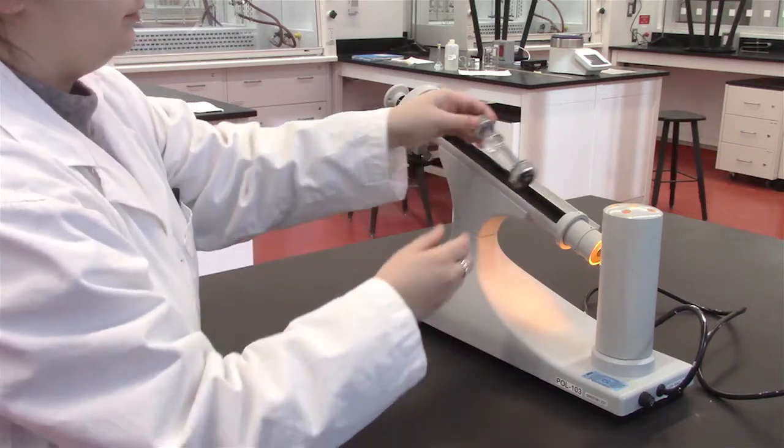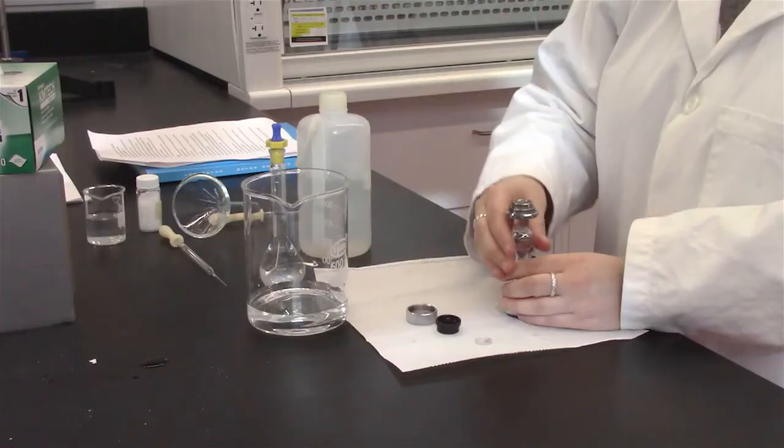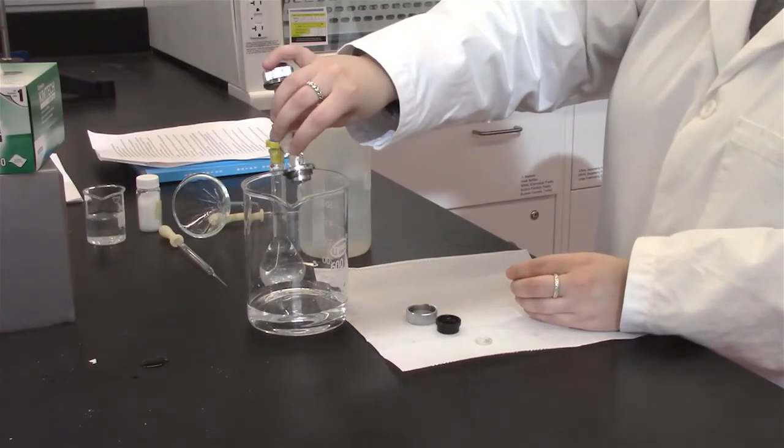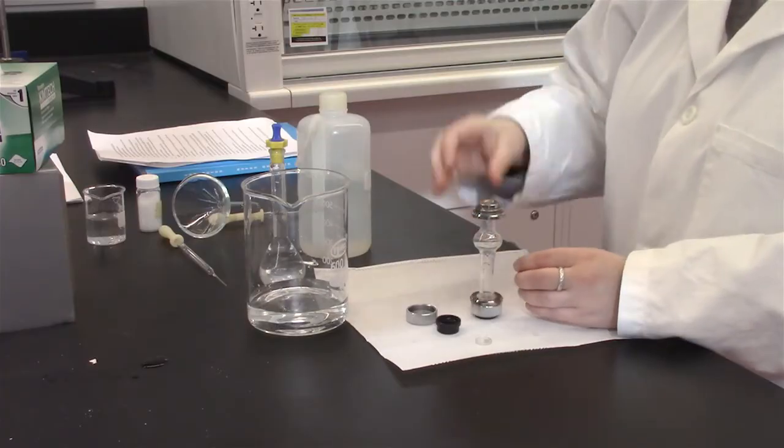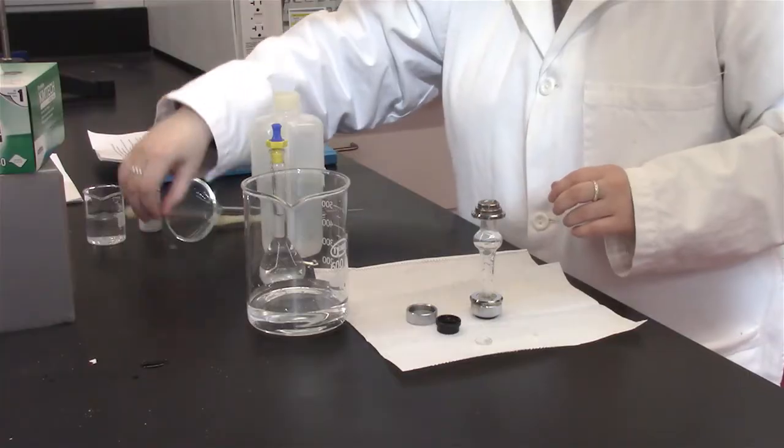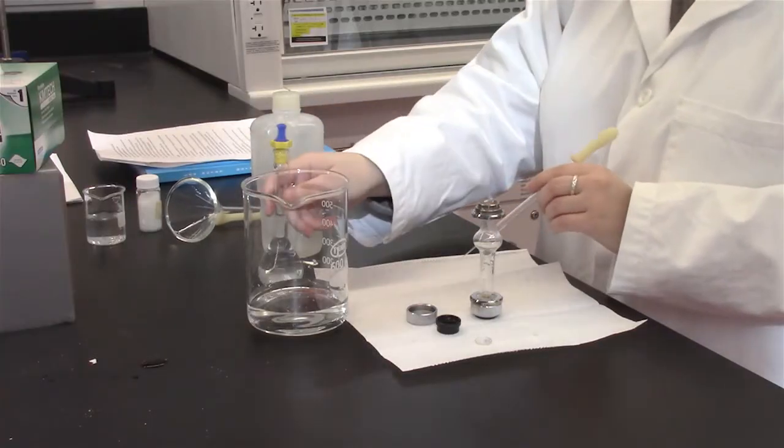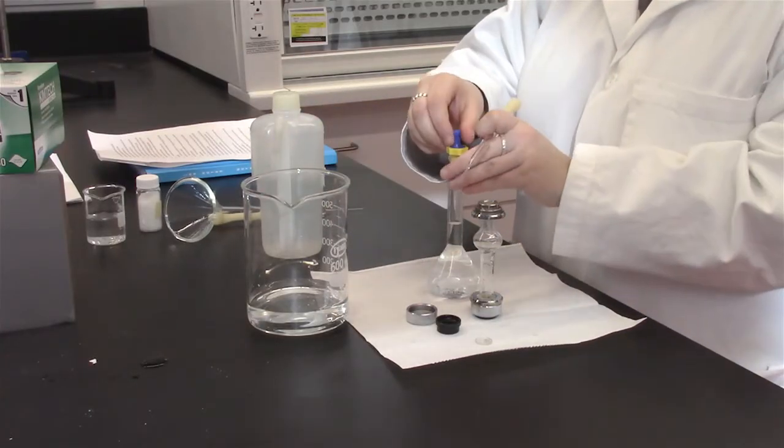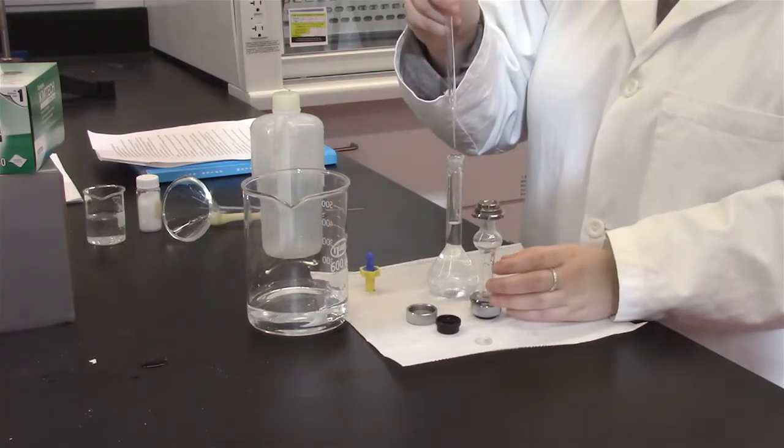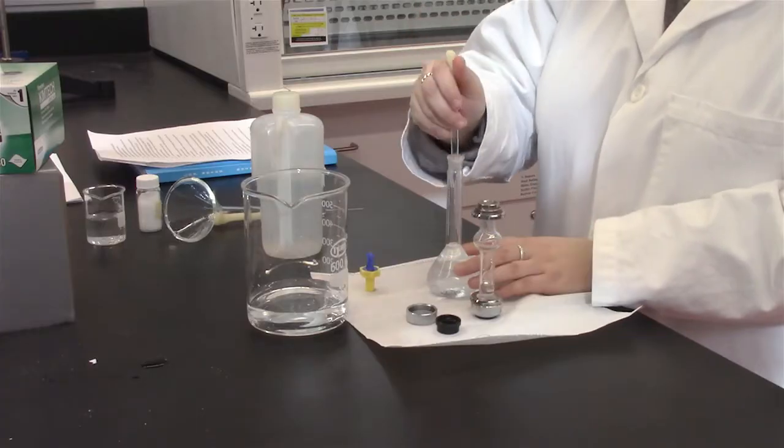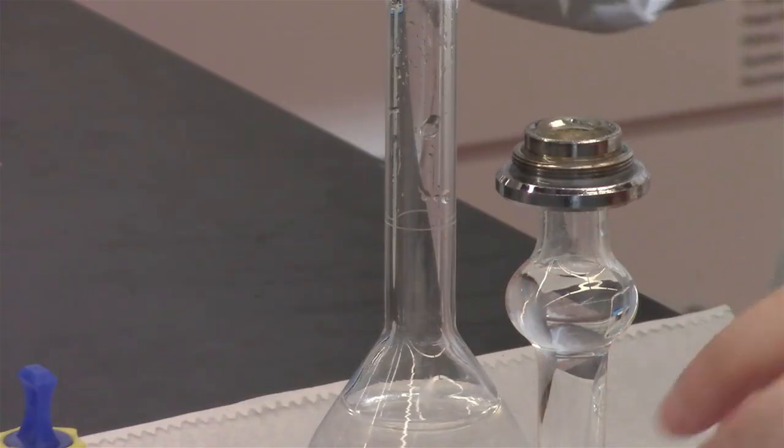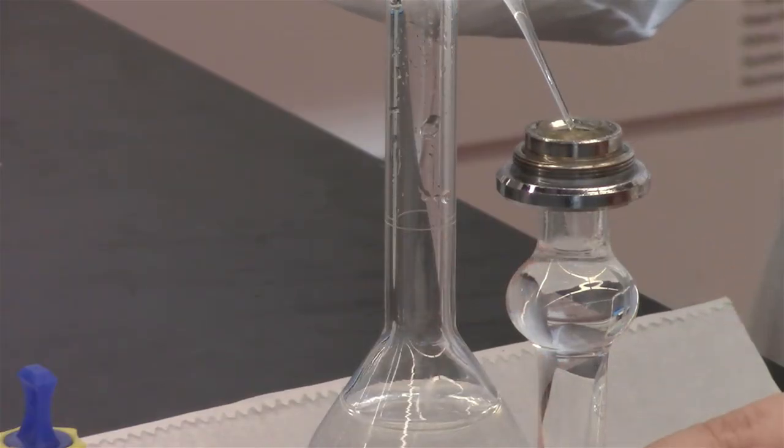Next, discard the deionized water in the waste beaker and fill the sample holder with your prepared solution. Ensure minimal bubbles are present or, if they are present, they are present in the curved portion of the sample holder as shown previously.